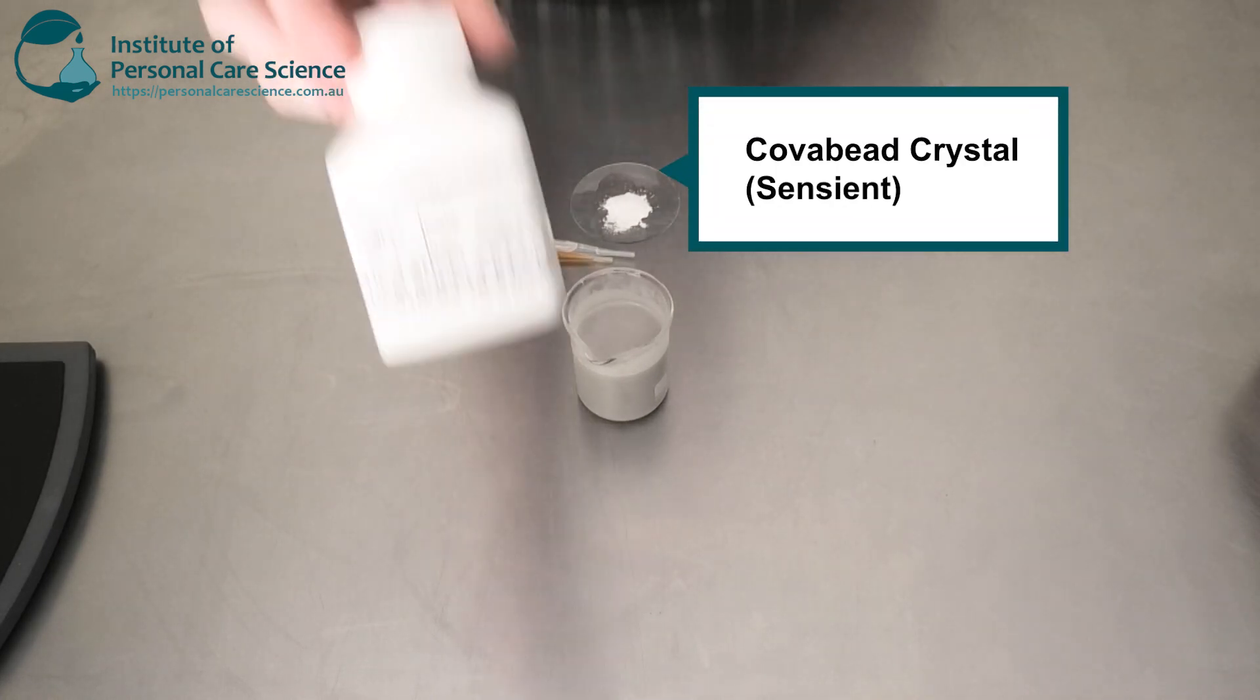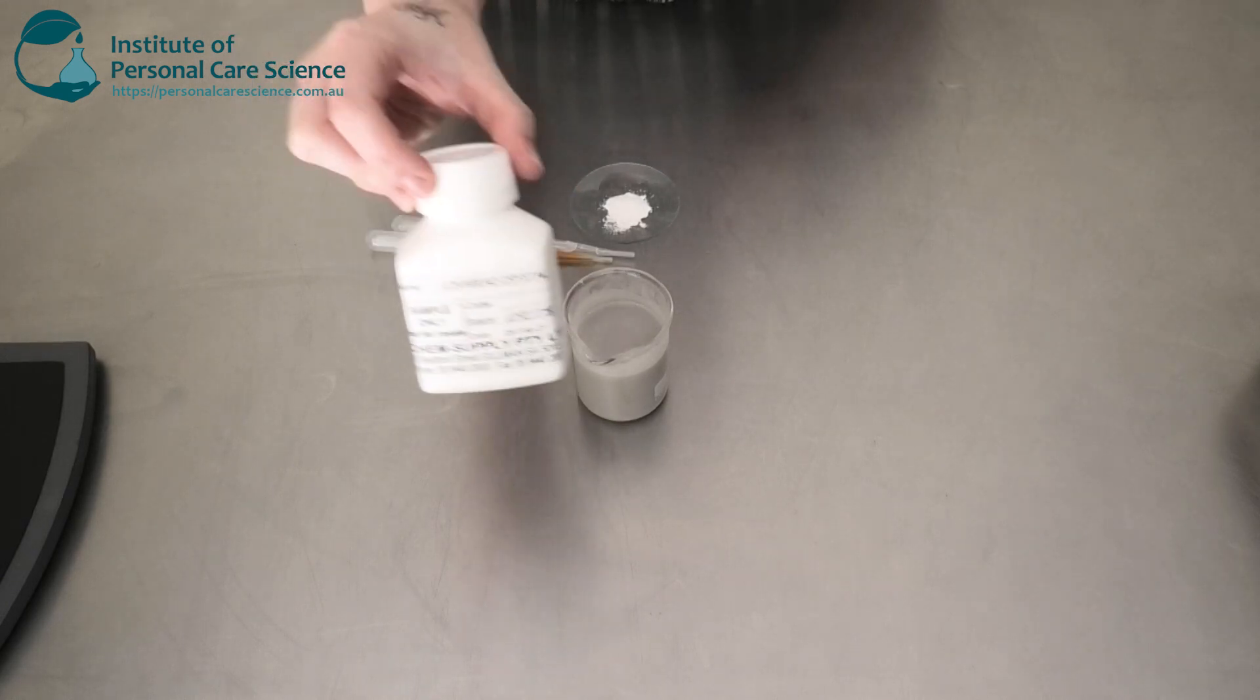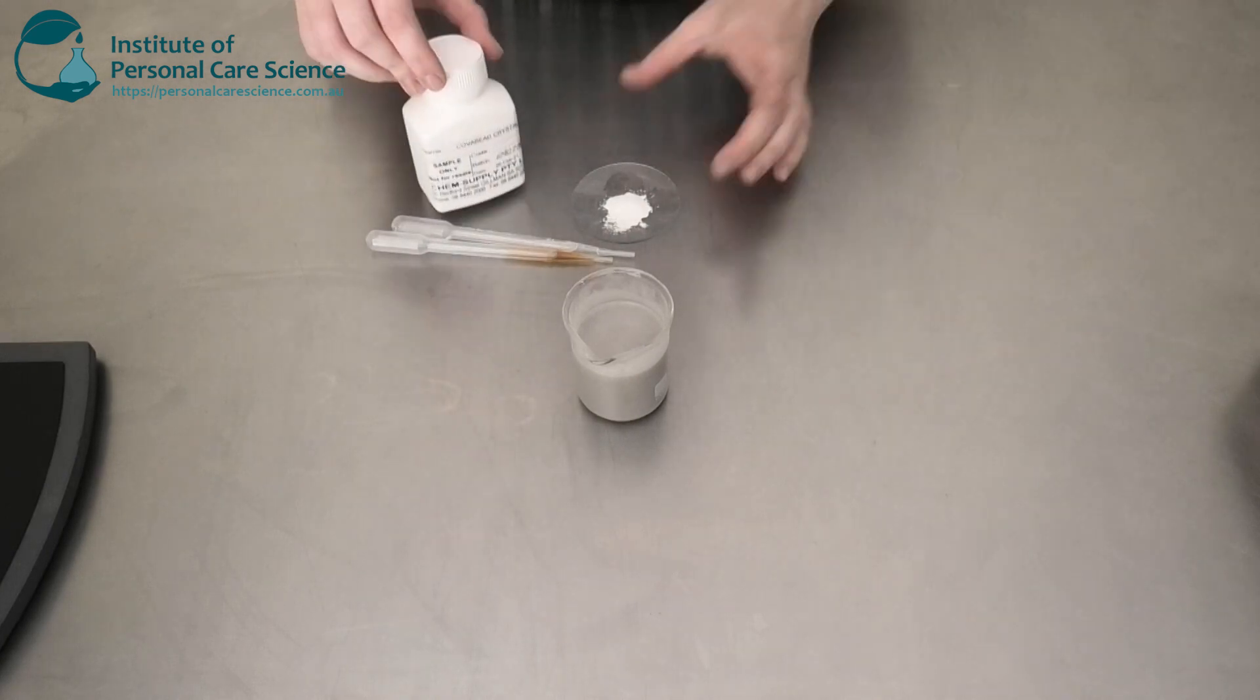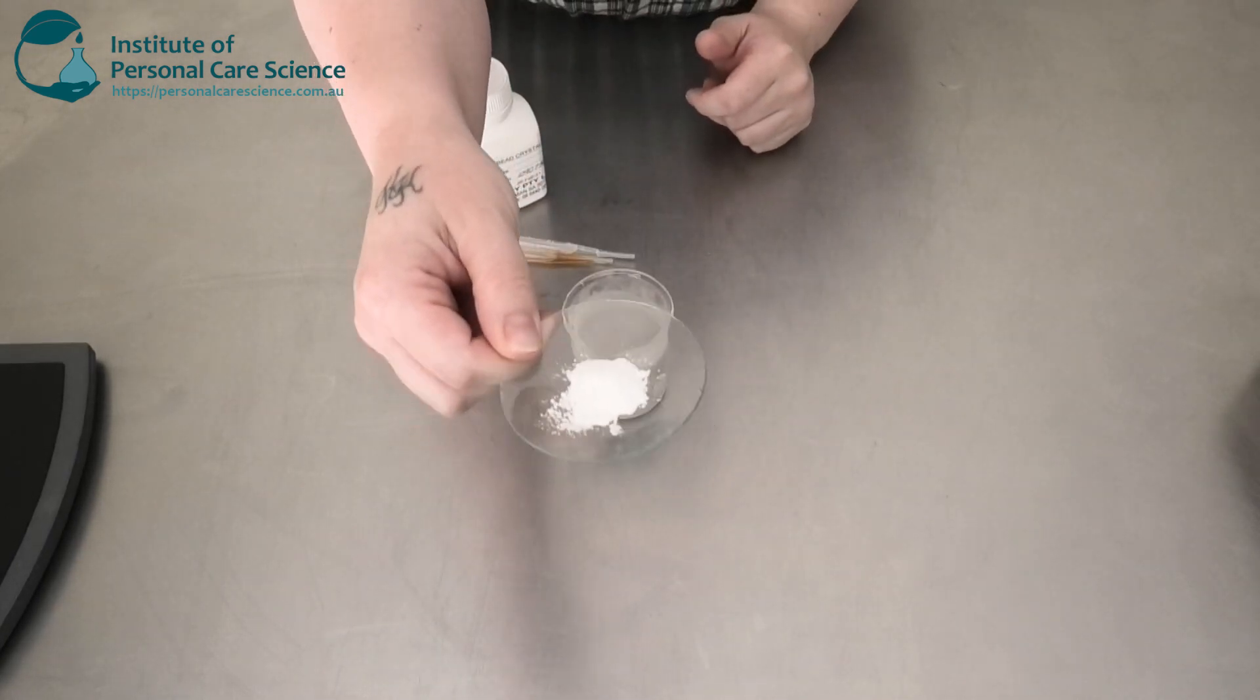So this is the Covabead Crystal from Sensient. So this also has some SPF boosting properties as well, but we are mainly using it for the anti-blue light properties.